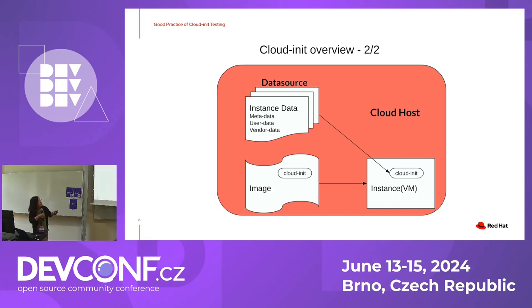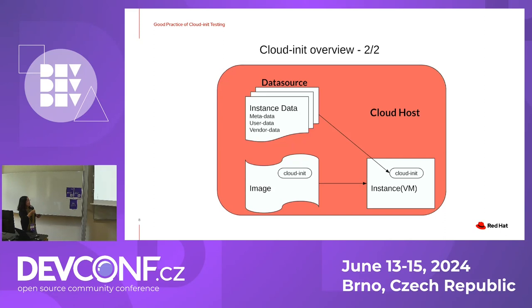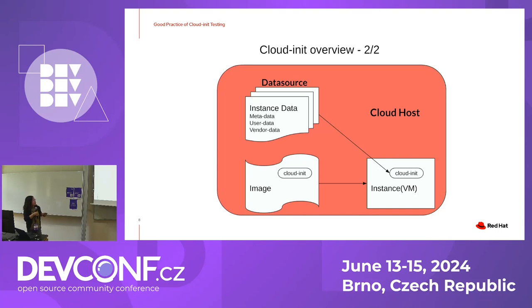This diagram shows how cloud-init works. A cloud instance is initialized with an image and instance data. The image always has cloud-init pre-installed, and instance data always includes the metadata, user data, and vendor data. They are organized as a data source — every platform has its own data source. Users just need to put the configuration data to the data source, then cloud-init customizes the instance with that data.